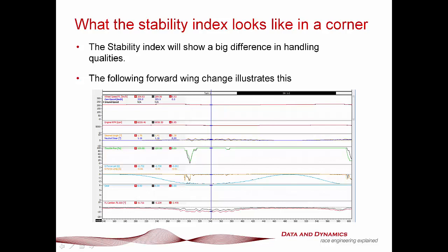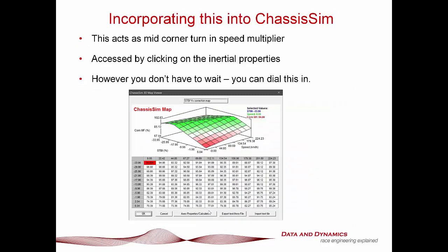Looking at what the stability index looks like during a corner: we have two traces here. The colored trace is an F3 car in standard format; the black trace is that same F3 car with the aero balance moved forward by five percent. Looking at the steering trace, you've got some minor changes — that boils down to the fact that ChassisSim is the terminator. But the big difference is in the stability index trace. Mid-corner, the baseline was minus 8.7 percent; with that five percent aero change it's minus 5.2 percent — a really big change. The driver is going to come in and tell you that felt really different.